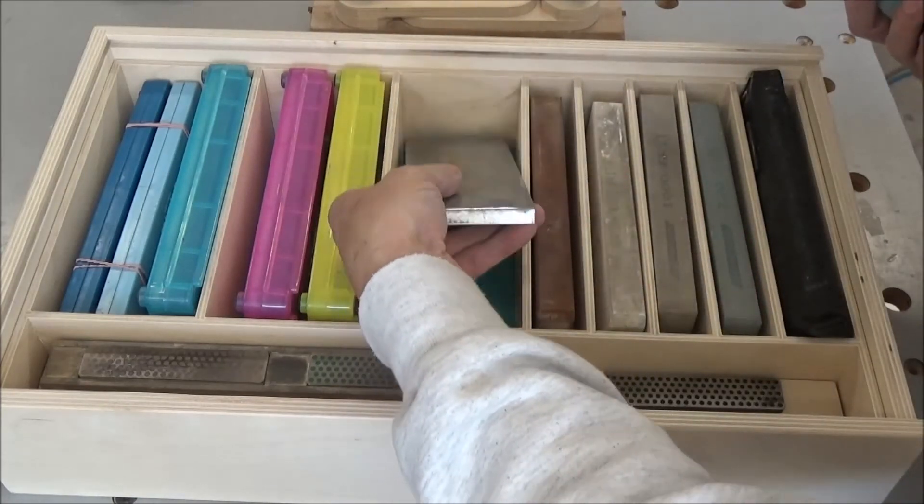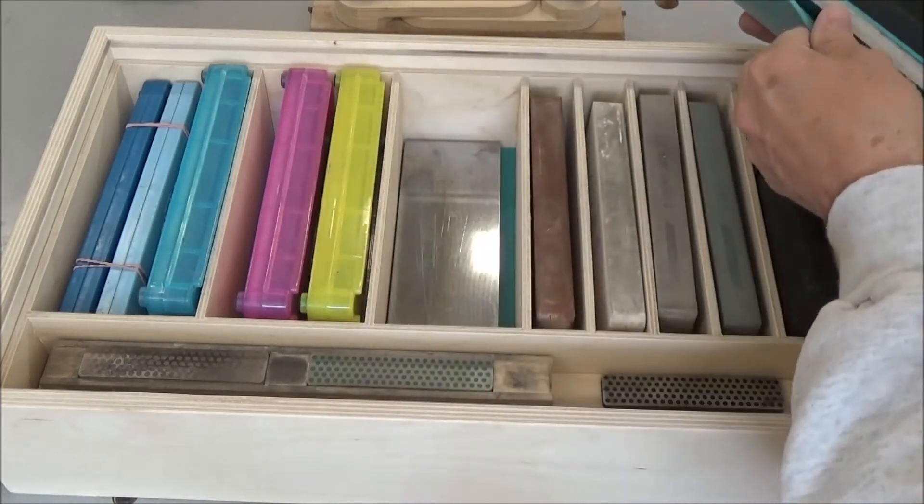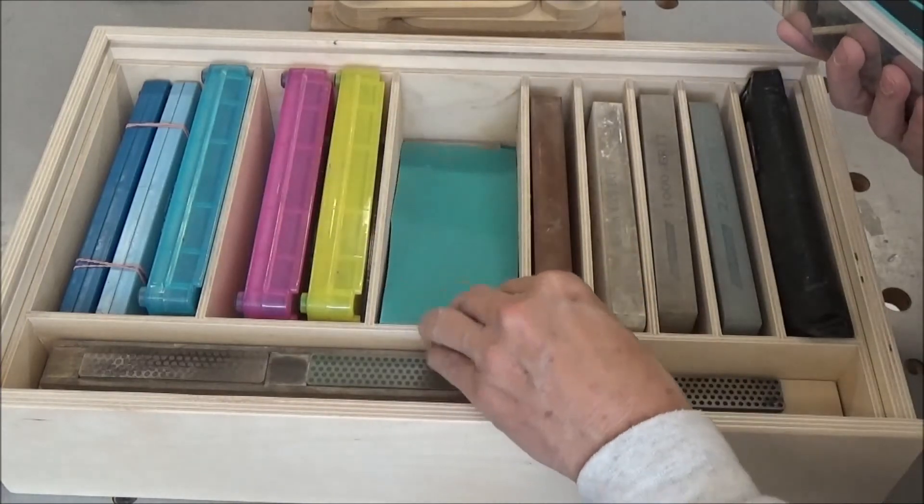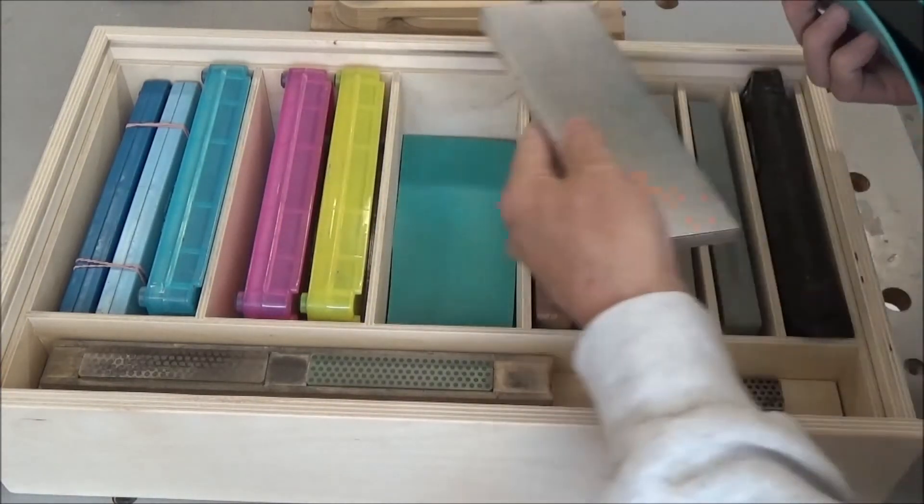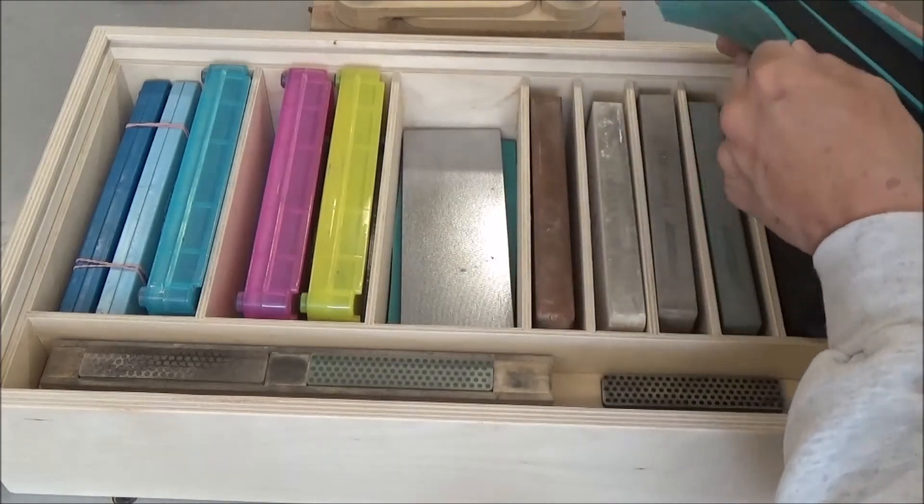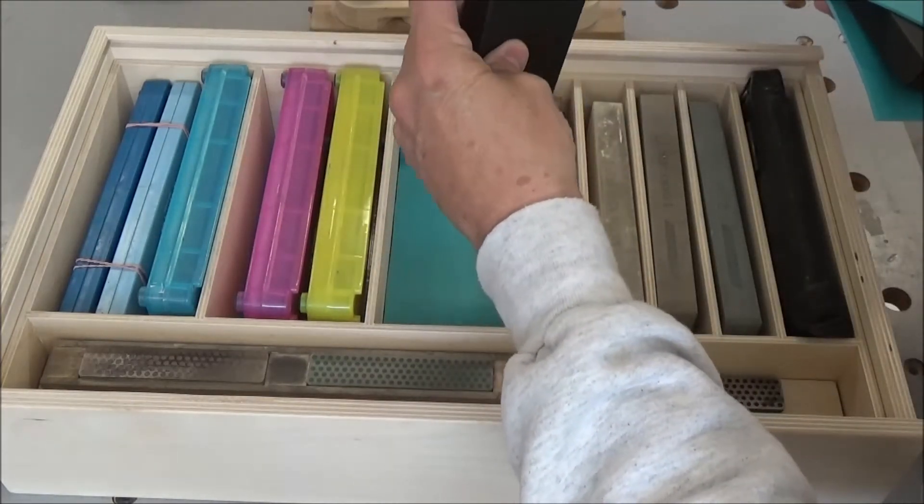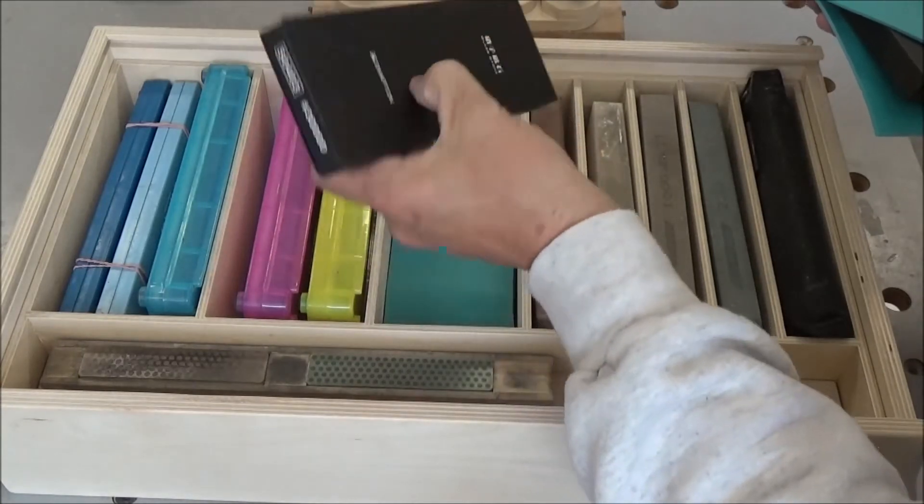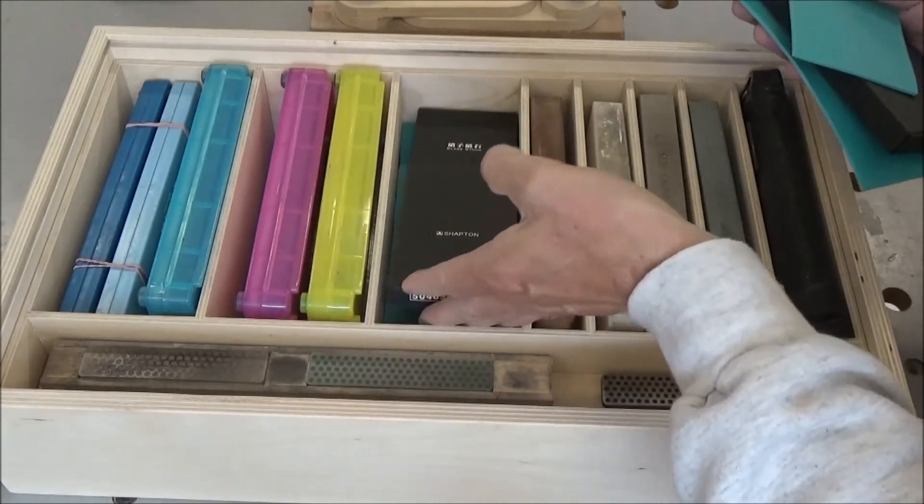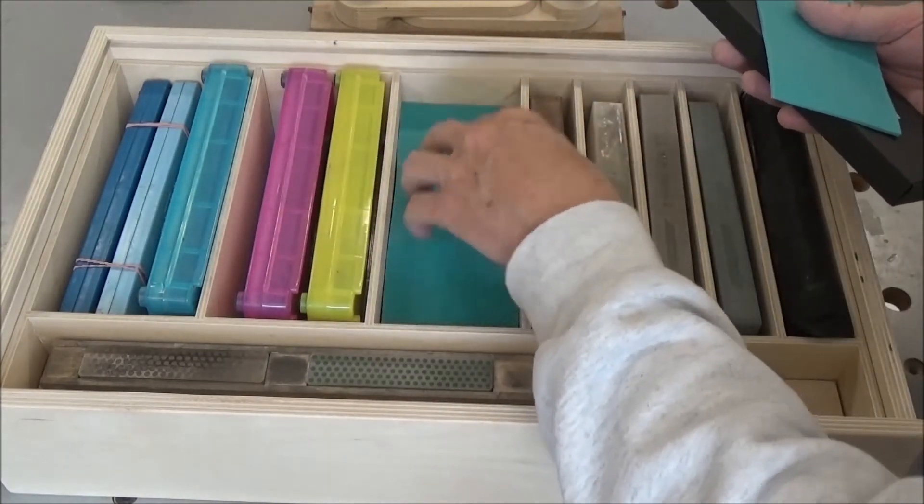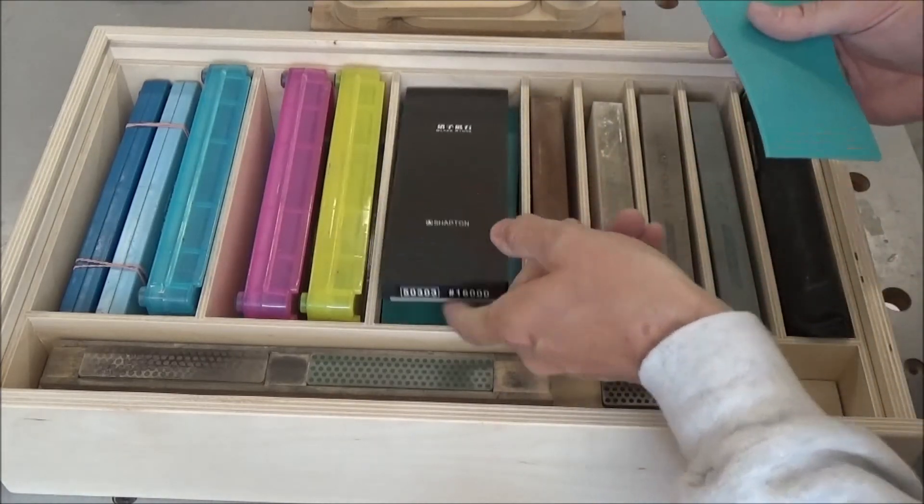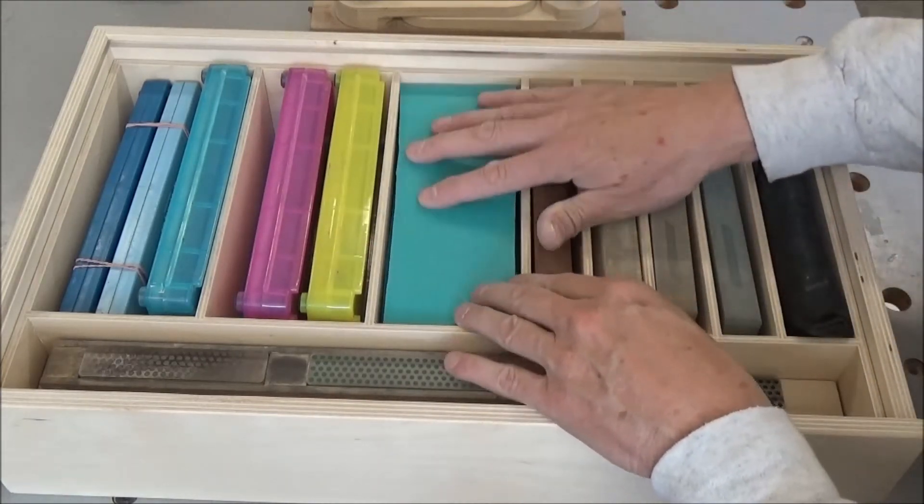I've got a couple of diamond stones. This is a thousand grit, and I just put that in there. Put a spacer in there with this material. 300 grit. Another spacer. My Shapton glass stone, which is 30,000 grit. Spacer. 16,000 grit. And a spacer on top of that.